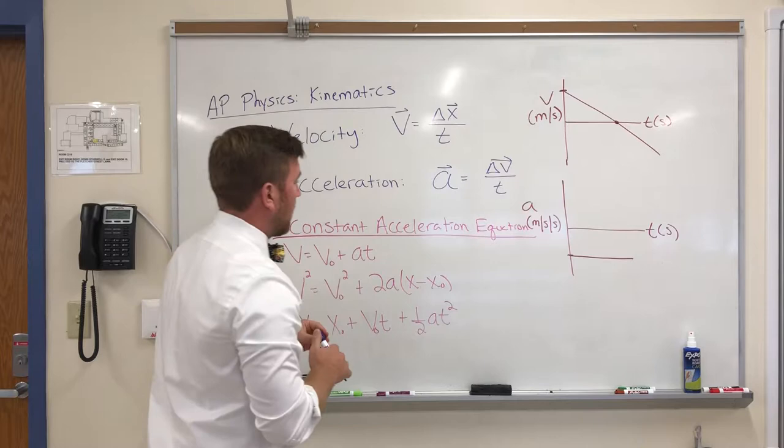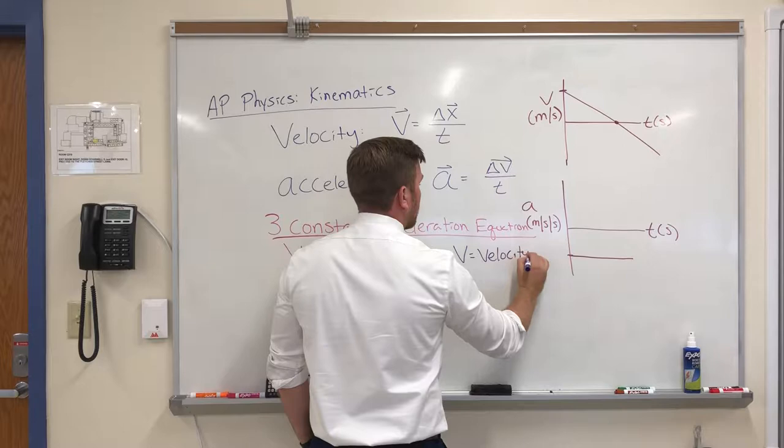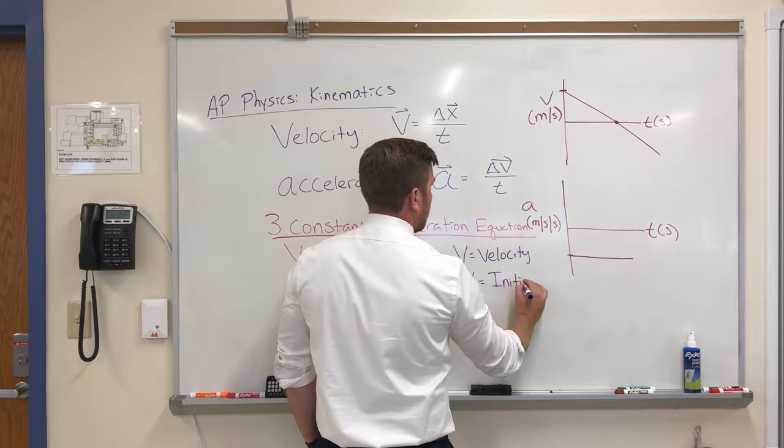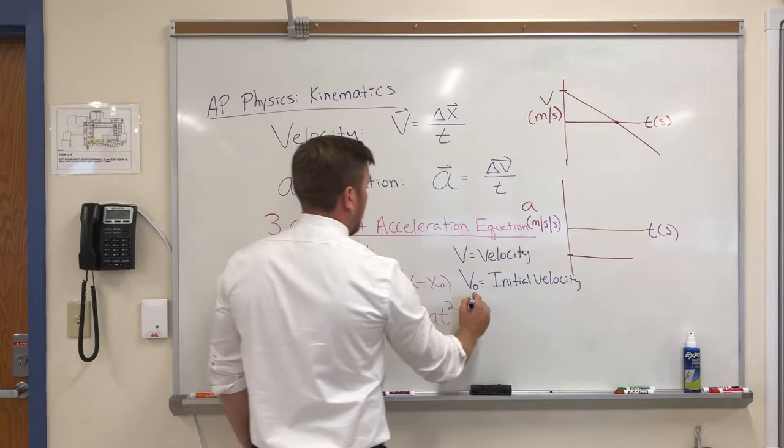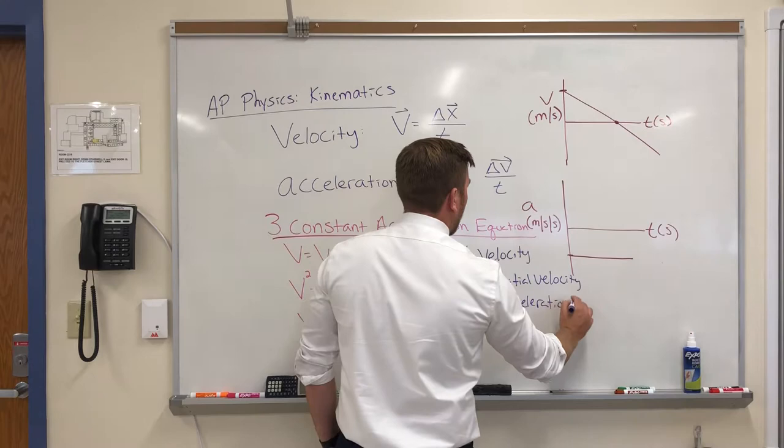And so you may guess what some of this stands for. V is for velocity. And in this case, it's final velocity. V0 is your initial or original velocity. A is always our acceleration.